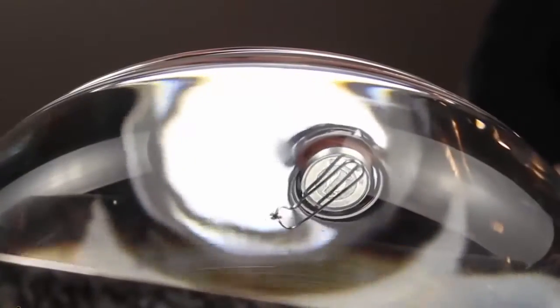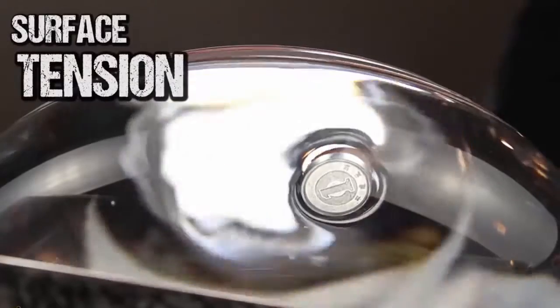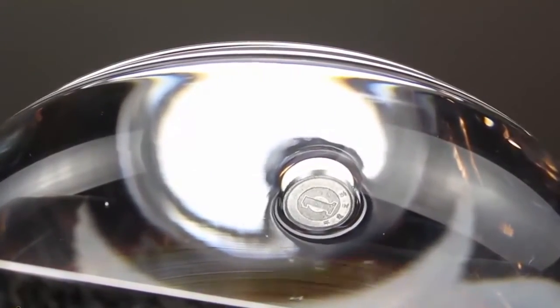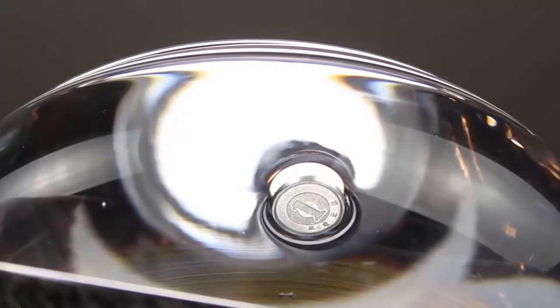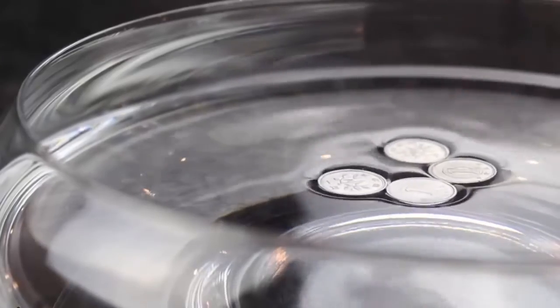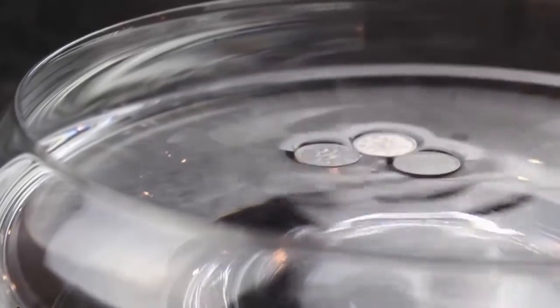But how does this work? The answer is surface tension. The attraction between the water molecules at the surface is just strong enough to support the weight of an aluminum coin without letting it break through. It's kinda like a thin elastic layer that covers the top. And it's a very delicate balance, so as you might imagine, adding just a touch more pressure will break the layer for a second and let the coins drop back to the bottom again.